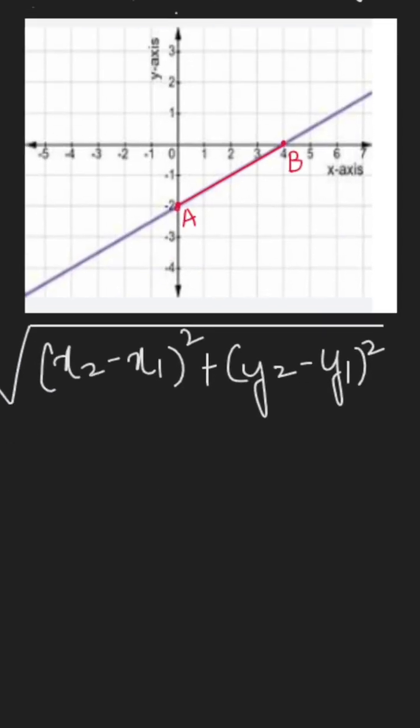So to apply this formula, let us first write the coordinates of A and B. The coordinates of A is 0, negative 2, and the coordinates of B are 4, 0.